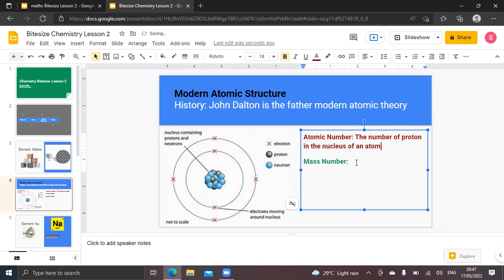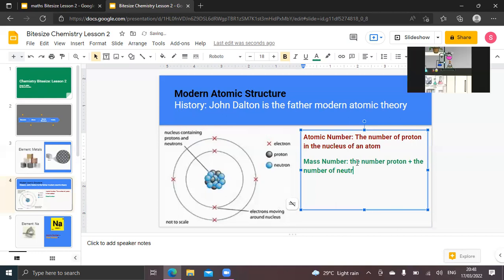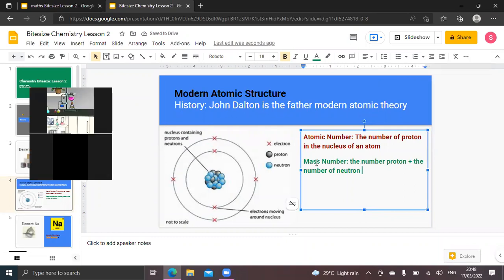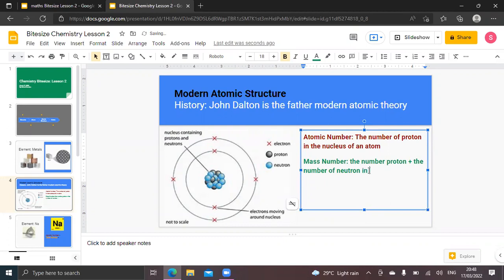Mass number is the number of protons plus the number of neutrons in the nucleus of an atom.